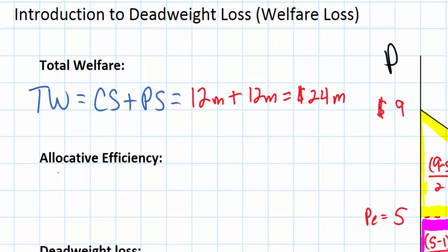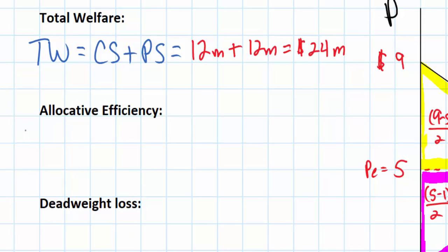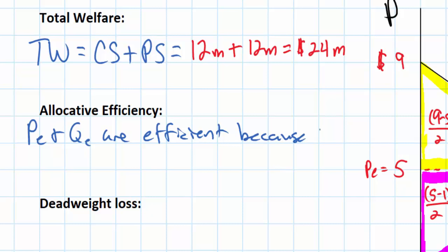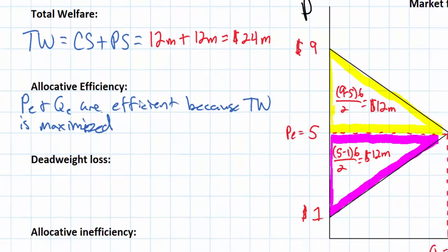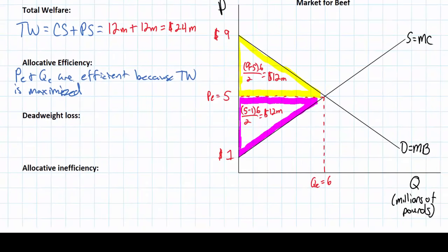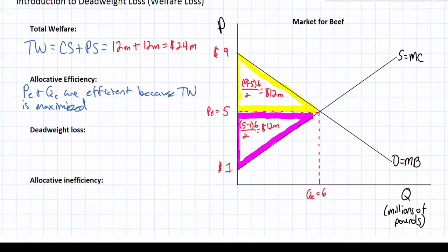So we have total extra well-being of producers and consumers in the market for beef of $24 million. Let's talk about allocative efficiency again. What makes the equilibrium price and quantity allocatively efficient? We can say that PE and QE are efficient because total welfare is maximized. There is no price-quantity combination other than five dollars and six million pounds that can increase total welfare at the current levels of demand and supply. Any outcome other than equilibrium results in what we call a deadweight loss — a loss of total welfare.